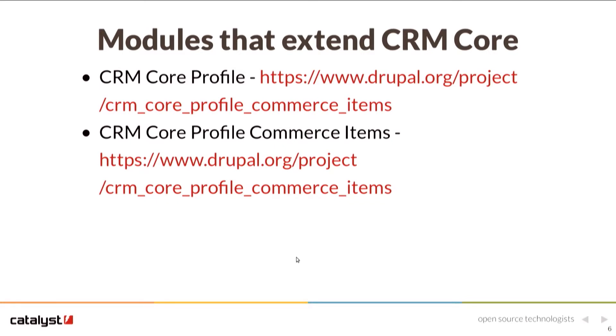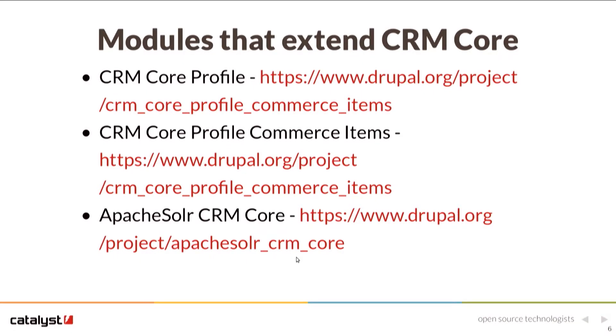CRM Core Profile Commerce Items — not the best name for the project, but what it does is act as a plugin for CRM Core Profile, allowing site builders to easily create forms that include e-commerce features for processing payments. An event registration form is probably the best description for this use case — you can create a form from the UI, attach a value to the ticket, and it's ready to go, allowing visitors to register for an event. There is also Apache Solr CRM, which provides integration for indexing your contacts, activities, and other data — useful if you already have Apache Solr on your website but don't have the Search API module.